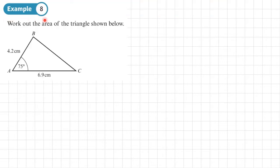Okay, example eight, work out the area of the triangle shown below. So I can see I've got two sides and the angle between them. So I can put these straight into the sine formula for giving me the area of a triangle.